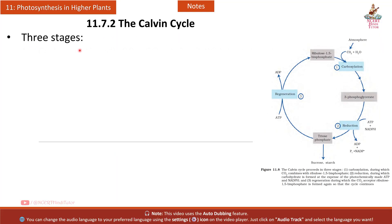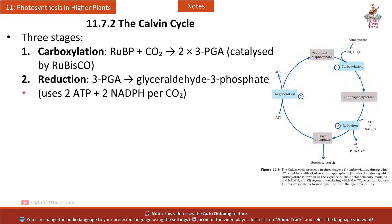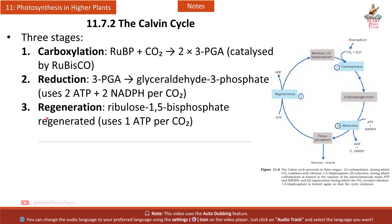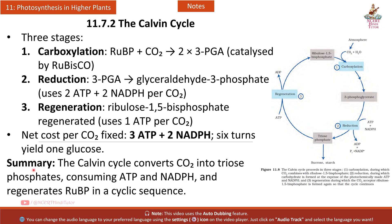Section 11.7.2 The Calvin cycle — three stages. First, carboxylation: RuBP + CO2 → 2×3-PGA, catalyzed by Rubisco. Second, reduction: 3-PGA to glyceraldehyde-3-phosphate, using 2 ATP and 2 NADPH per CO2. Third, regeneration: ribulose-1,5-bisphosphate is regenerated using 1 ATP per CO2. Net cost per CO2 fixed: 3 ATP and 2 NADPH; 6 turns of the cycle yield 1 glucose.